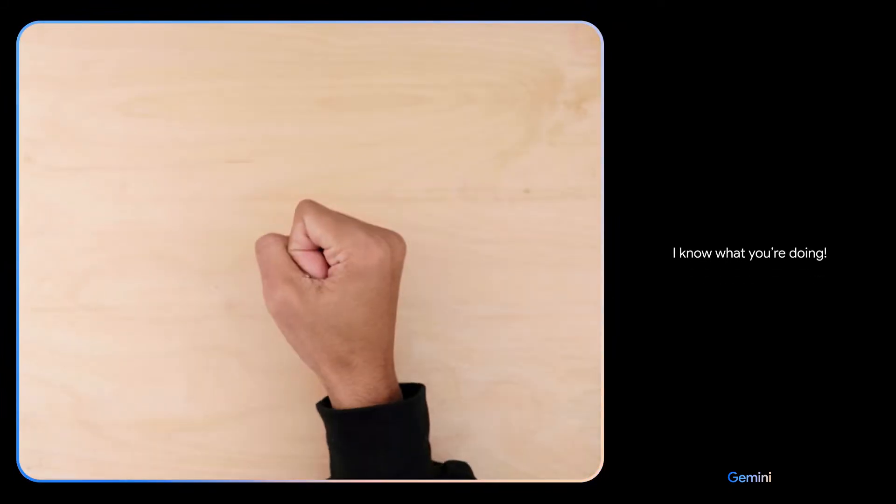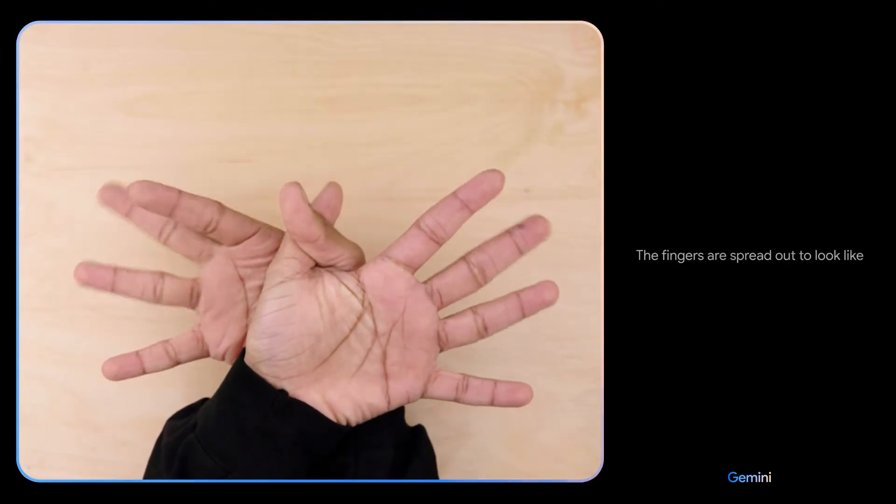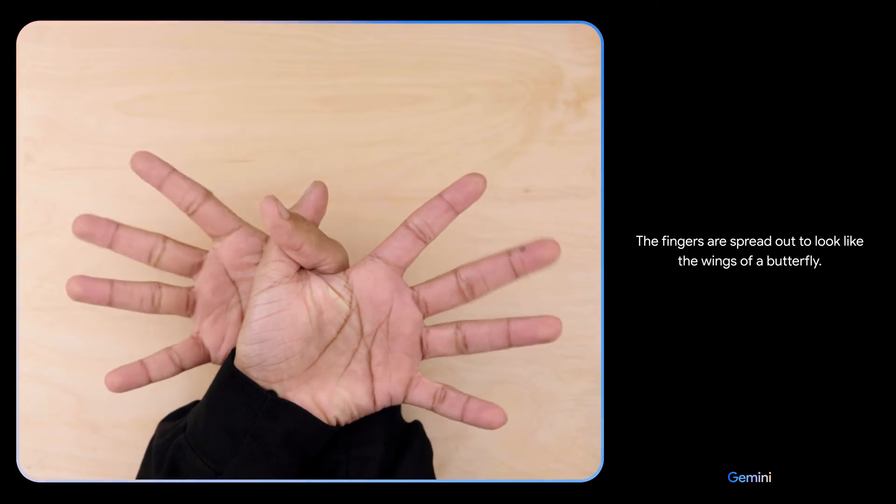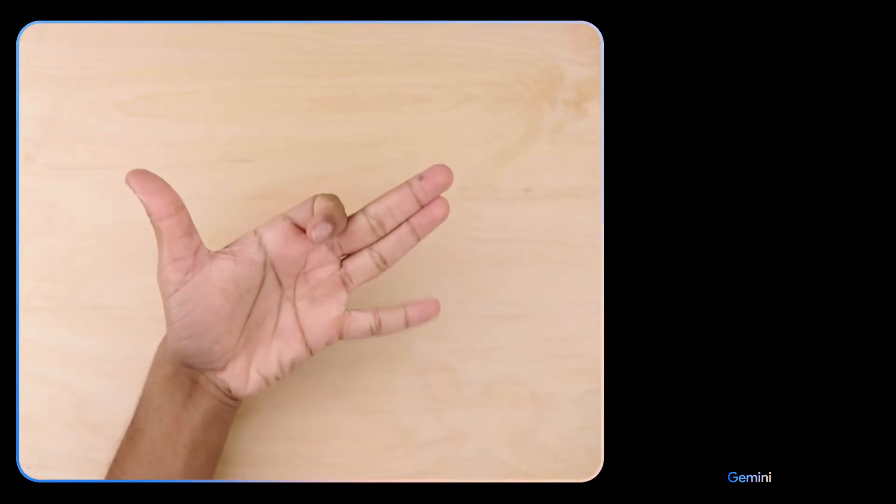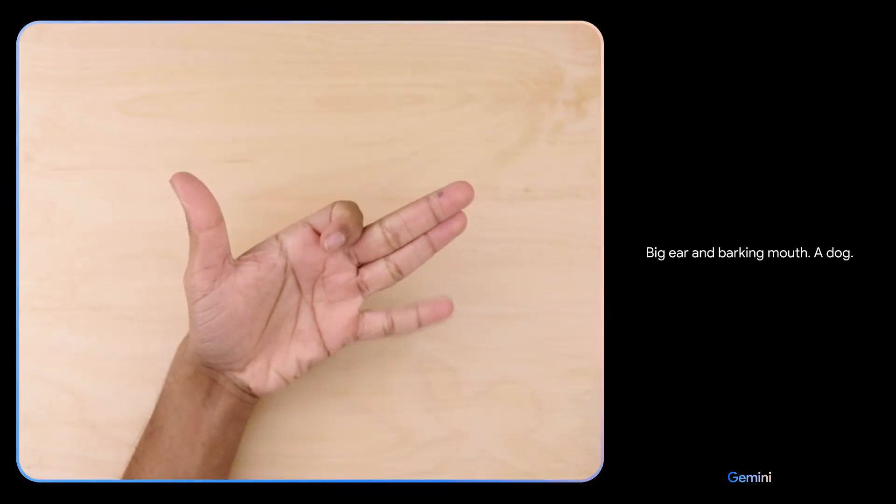I know what you're doing. You're playing rock paper scissors. What do you see now? The fingers are spread out to look like the wings of a butterfly. What's this? Big ear and barking mouth. A dog. Sweet.